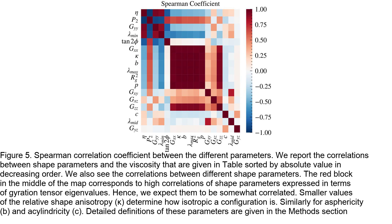The Spearman correlation coefficient matrix shows correlations between shape parameters and viscosity. The red block in the middle corresponds to high correlations among shape parameters derived from the gyration tensor eigenvalues. The data indicate that shape parameters derived from the gyration tensor do not strongly correlate with shear thinning behavior. In contrast, the bond orientation parameter P2 shows a strong negative correlation with viscosity, indicating that the alignment of individual bonds with the flow direction is the key factor influencing shear thinning across the different architectures.